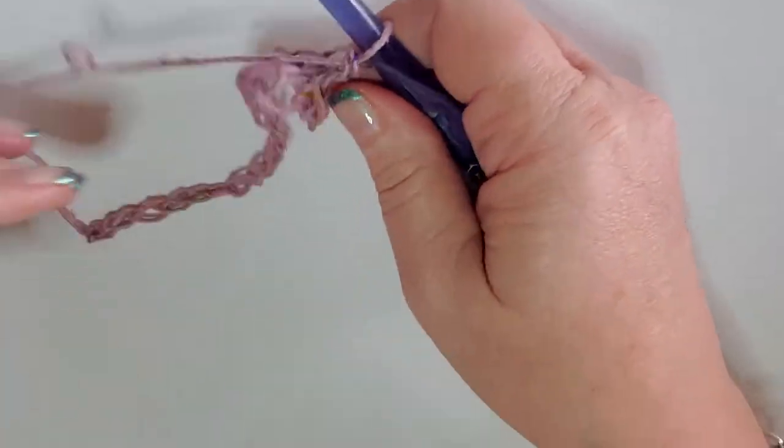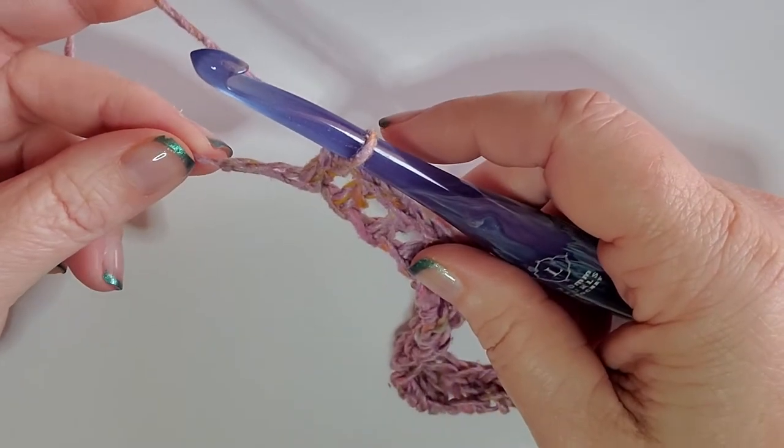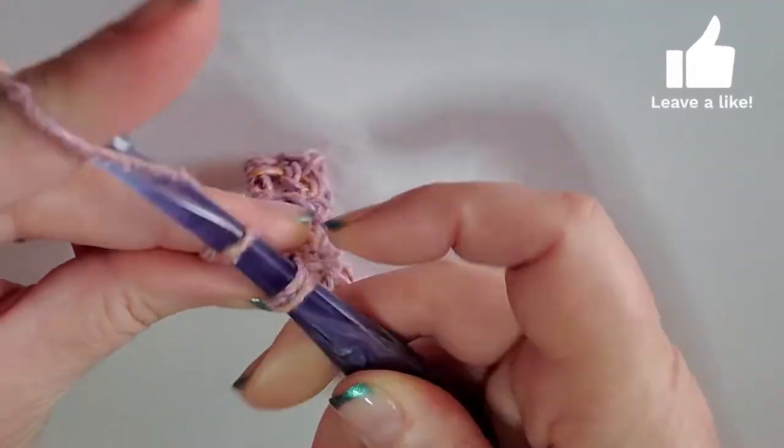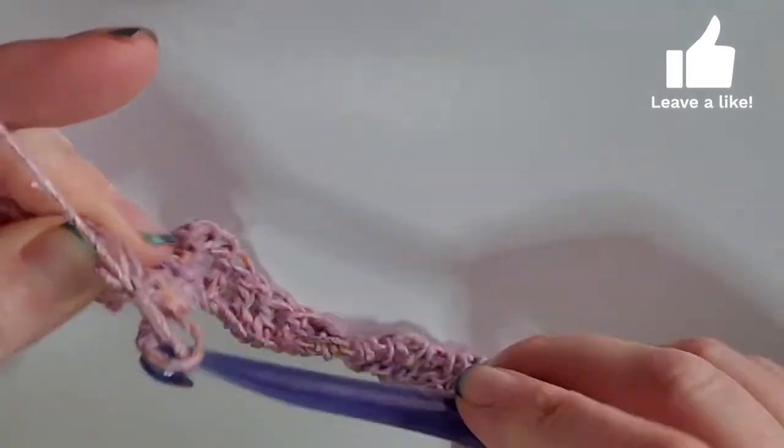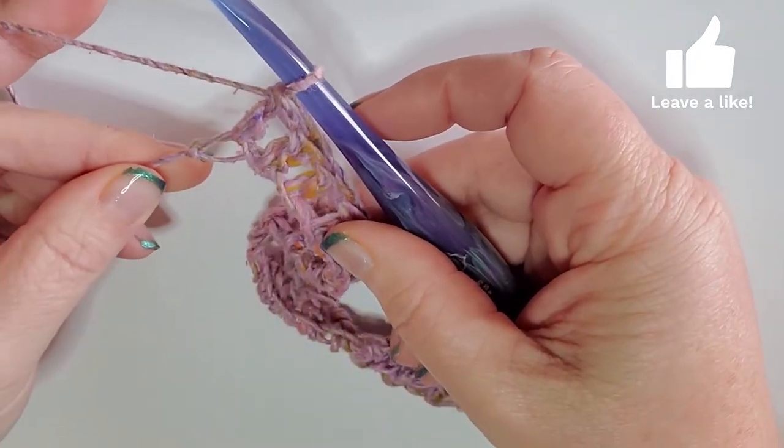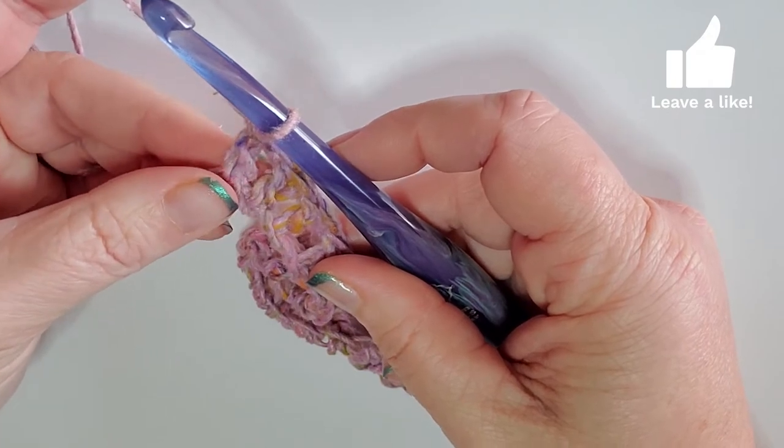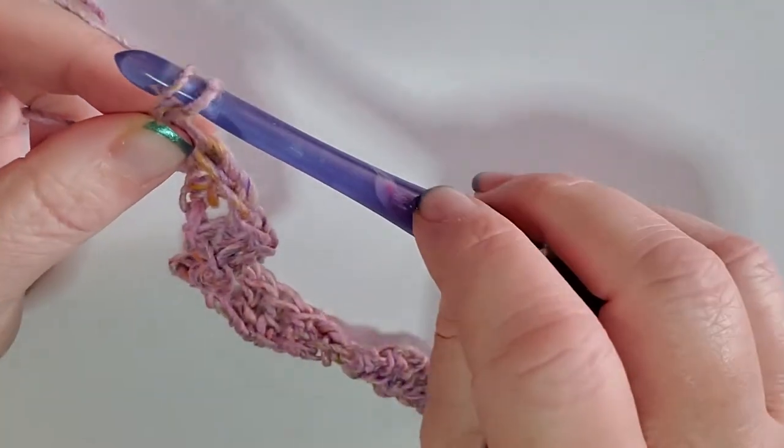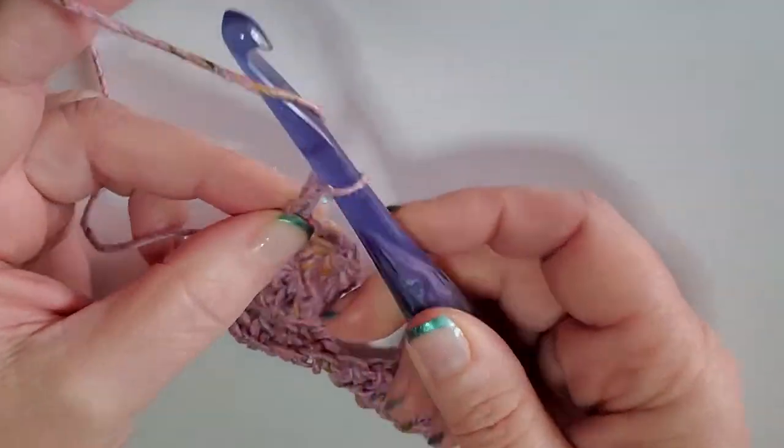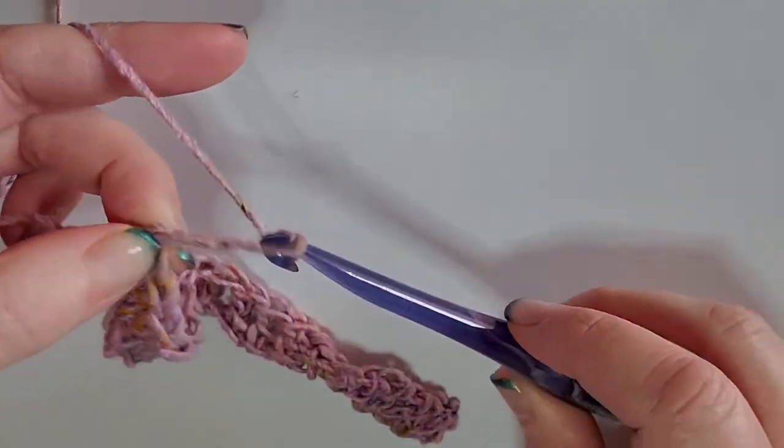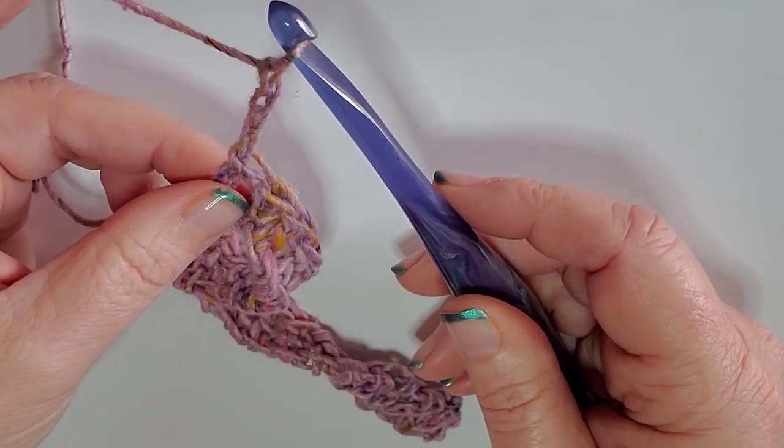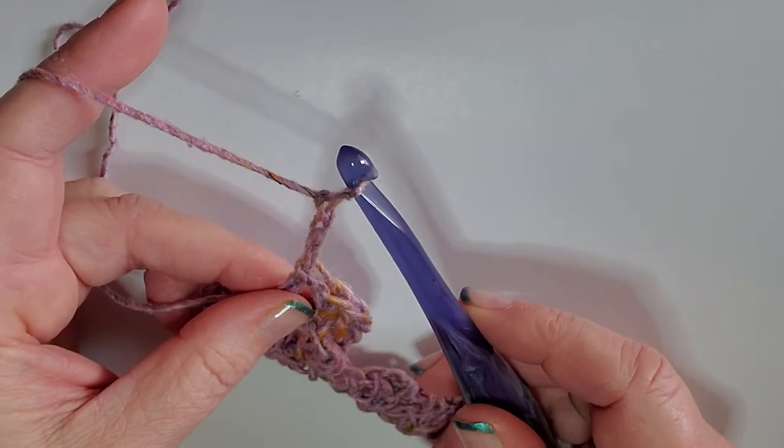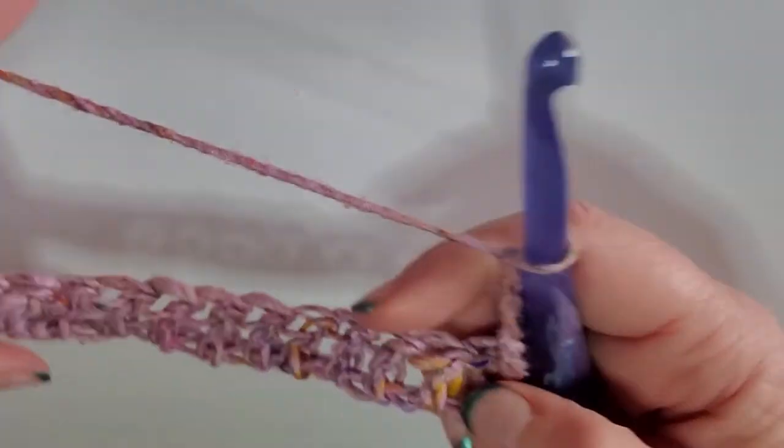Here we are, we have one stitch to go, so I'm going to just slap a double crochet right in there. We have made it now to the end of our row, so what we are simply going to do is chain three. One, two, three, and this chain three will count in every row as a stitch.